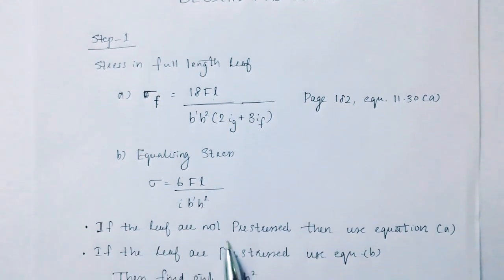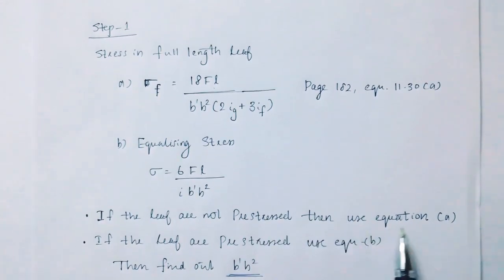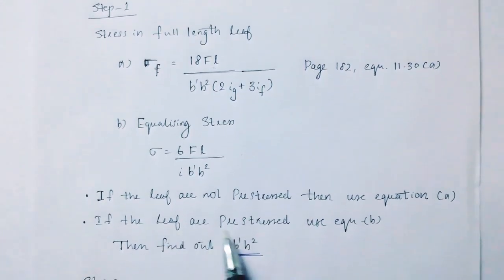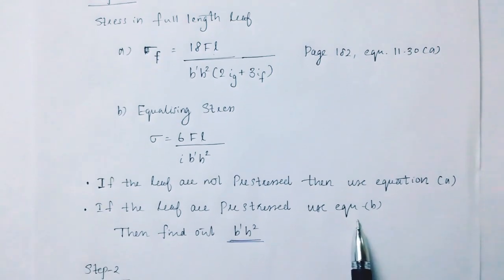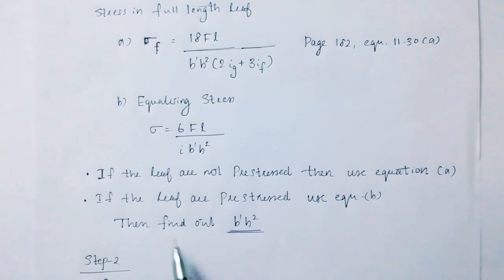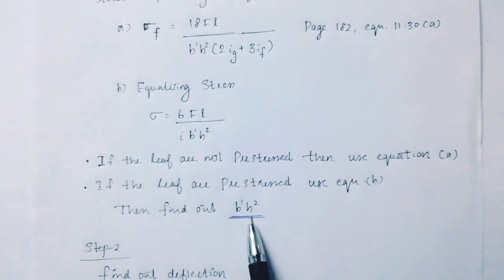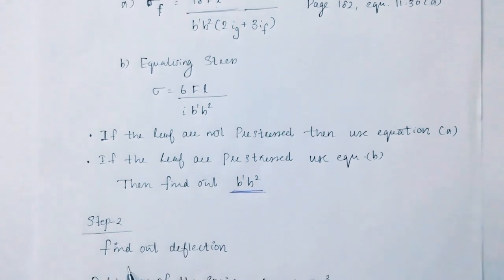If the leaf is not pre-stressed, then use equation b'a. Then find out b'h-squared into the value. We have to solve this equation.